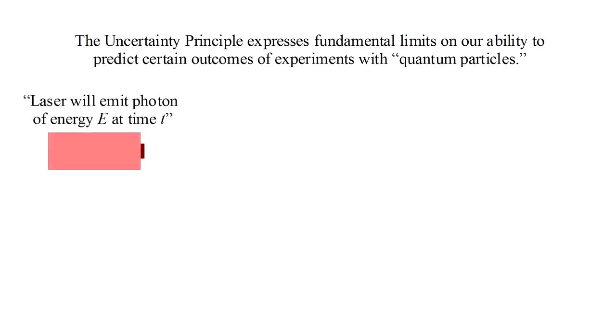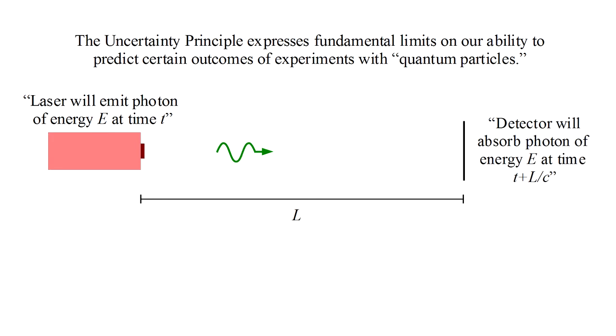Suppose someone claims his laser will emit a photon of exact energy E at exact time t. The photon will travel at the speed of light to a detector a distance L away, therefore the detector will absorb a photon of energy E at time t plus L over C.